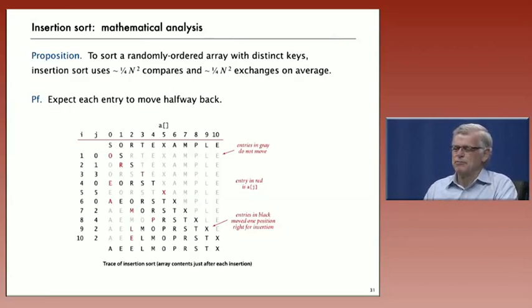This is more complicated to prove. It depends on the array being randomly ordered. And again, you can get a feeling for where the proposition comes from by looking at this N by N trace. Again, the black elements are the ones that we compare and, and actually, they're also the exchanges. And the red one is the one that's finally put into place.